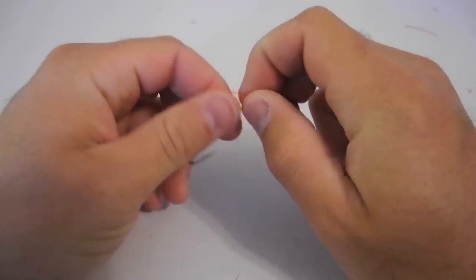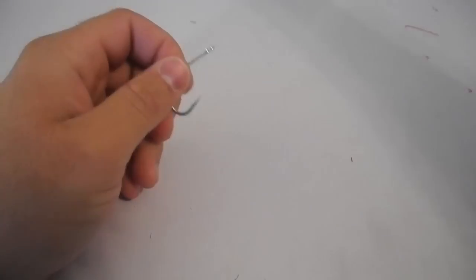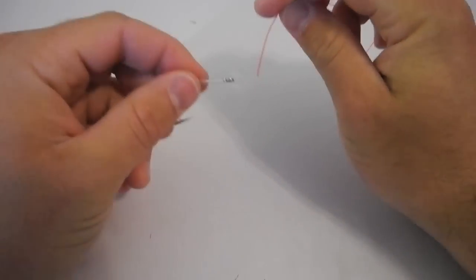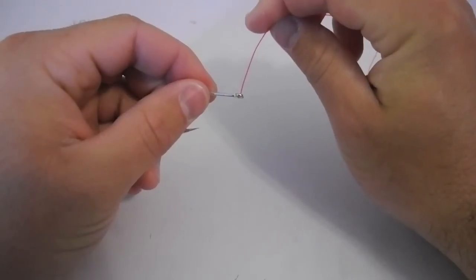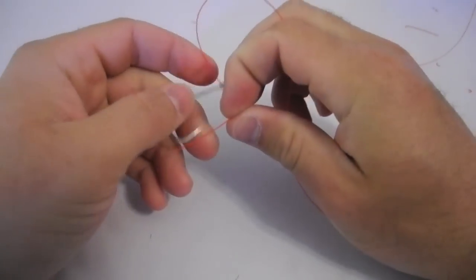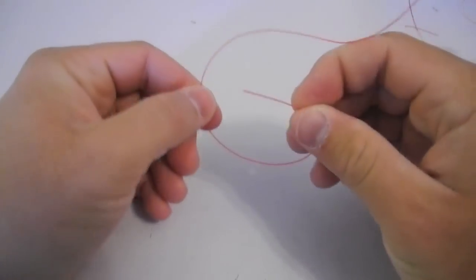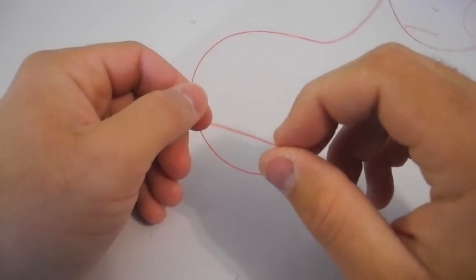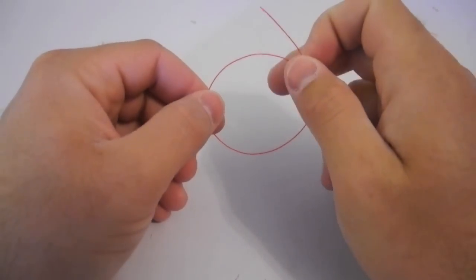So the first thing I'm going to do is I'm going to hold my fly here in my left hand, and I'm going to take my tippet, and I'm actually going to go down through the eye. The only reason I'm doing it this way is for demonstration purposes. That way you can see exactly how it's done, because if you don't make these wraps in the right order, then it won't work.